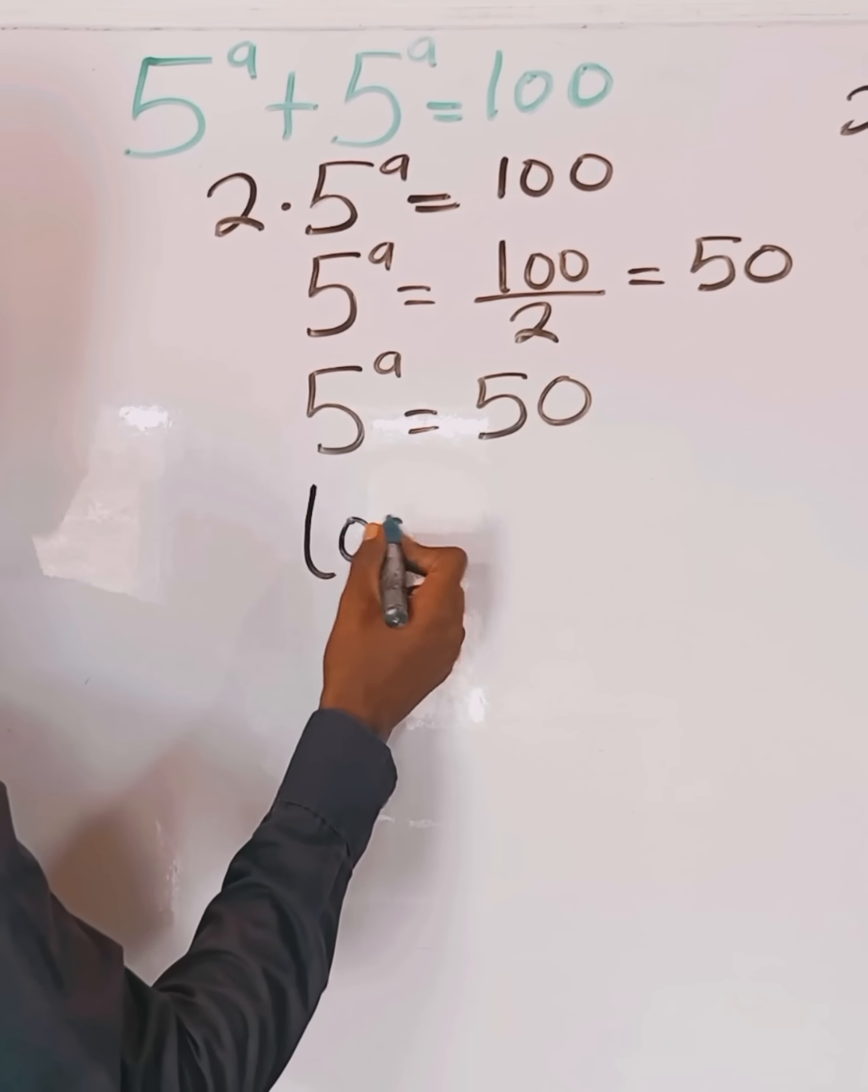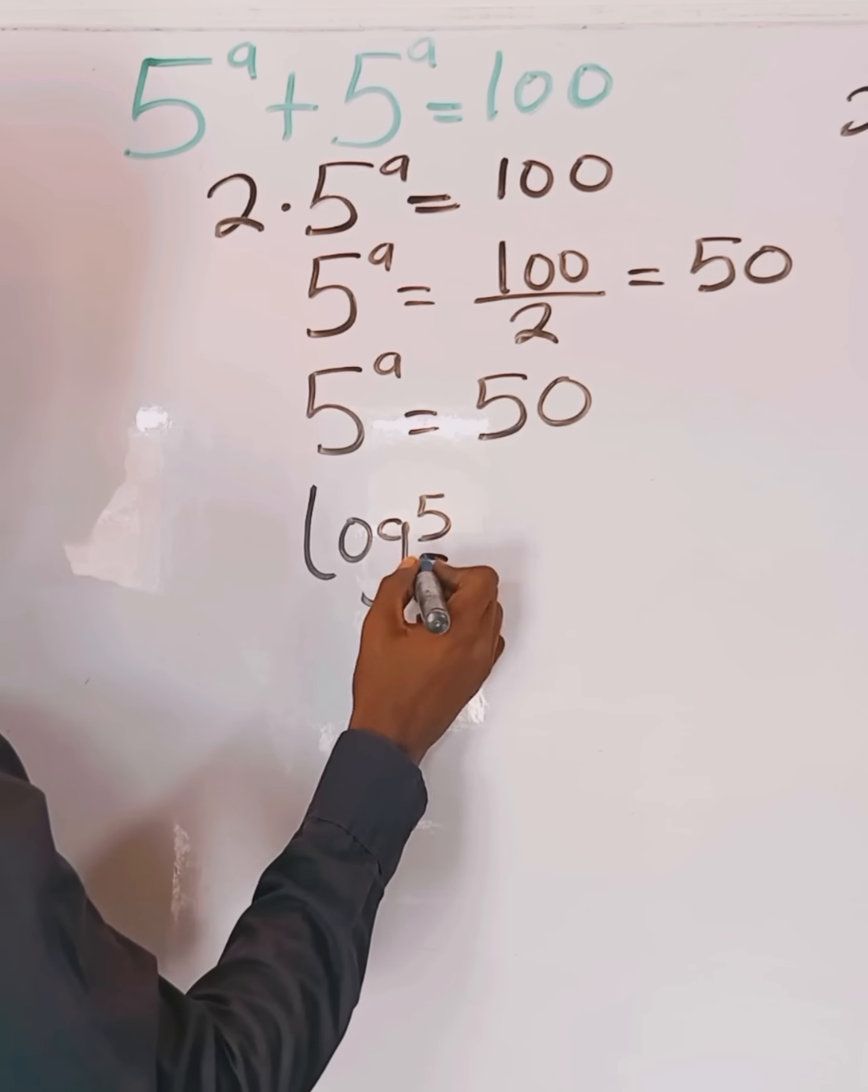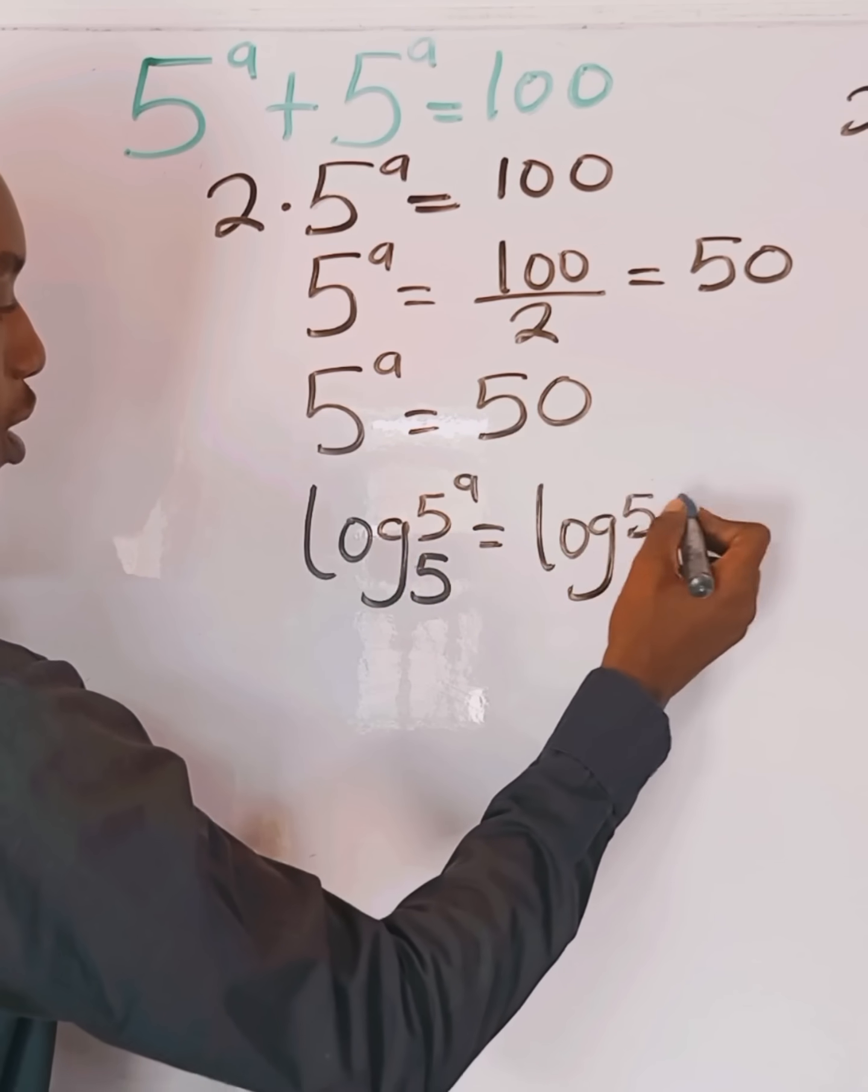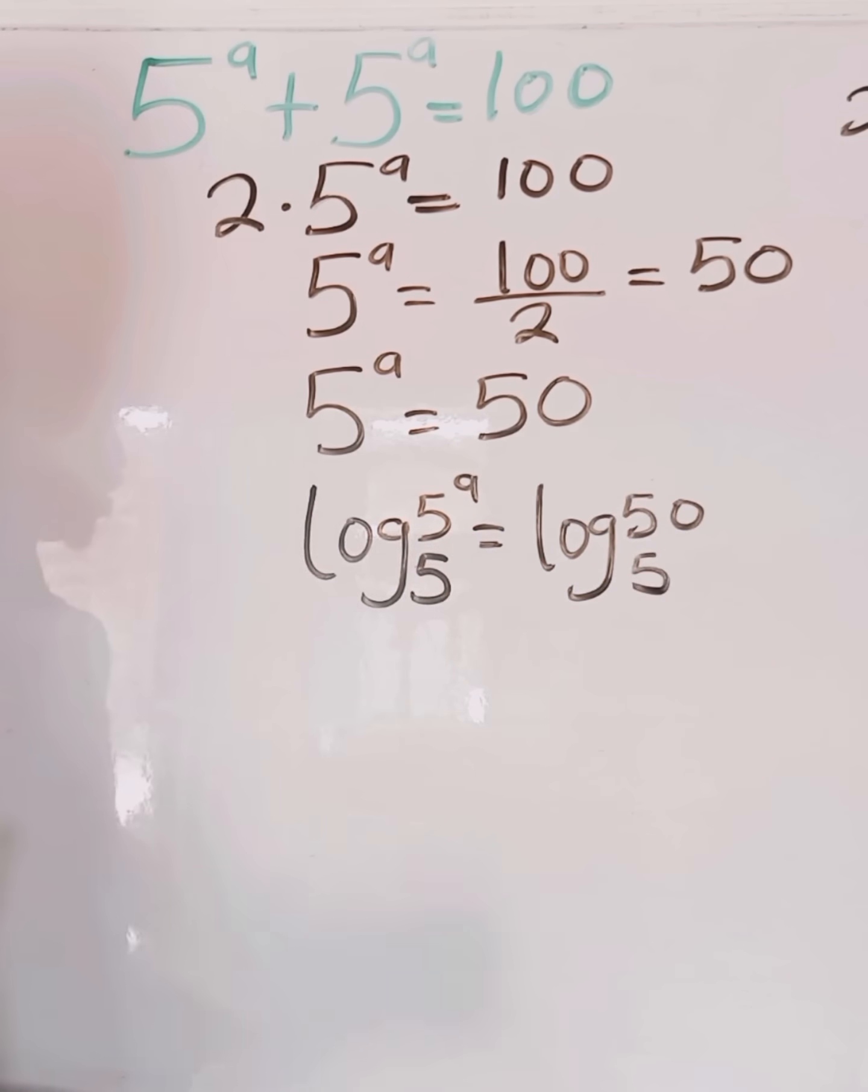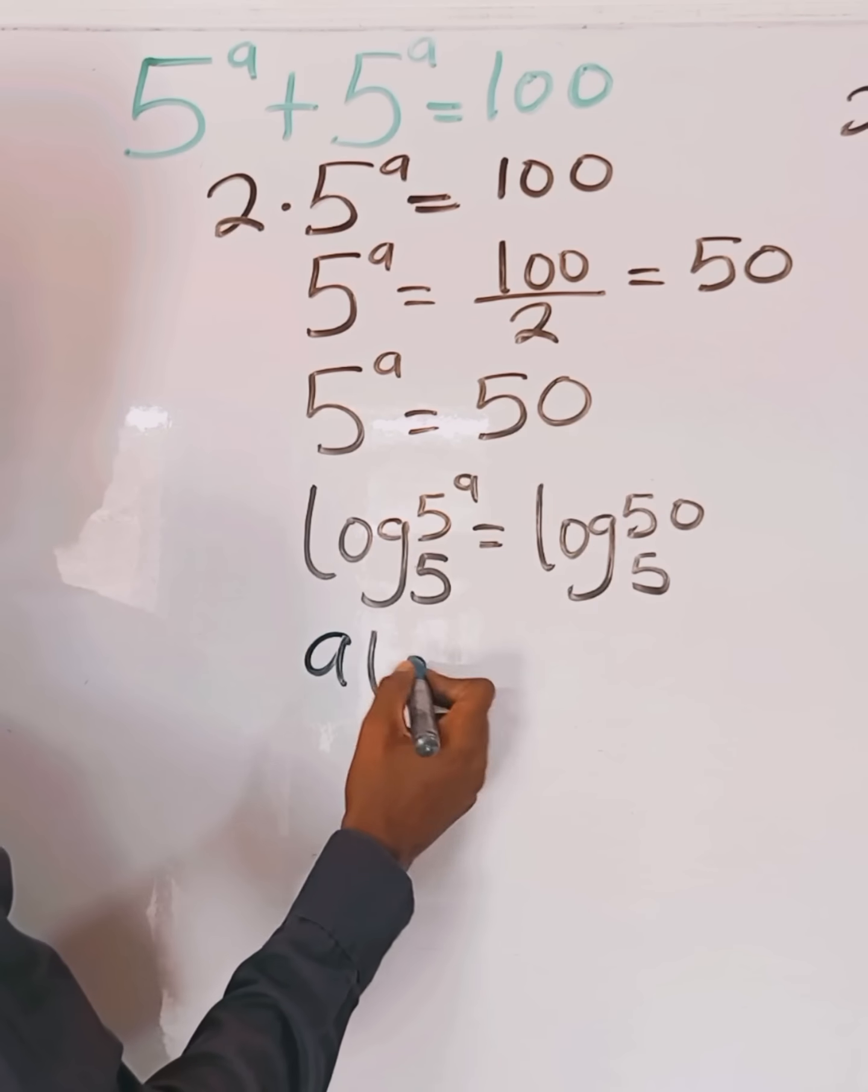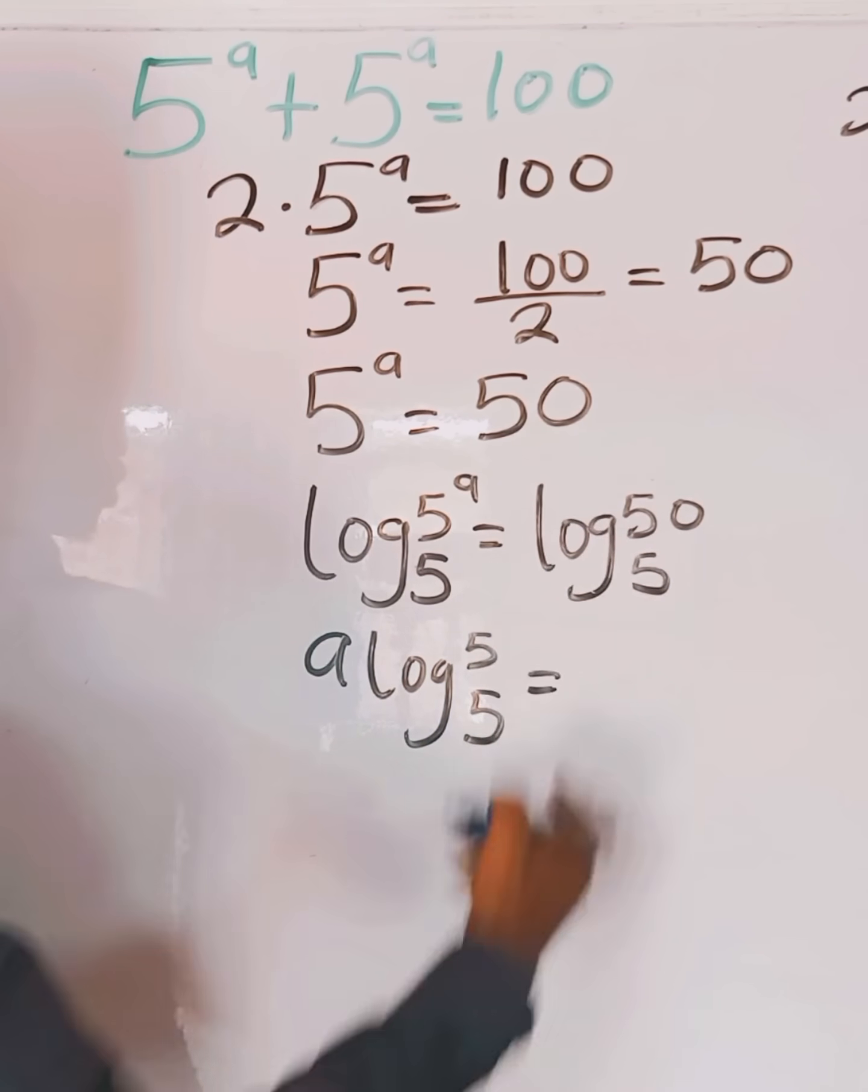Then we take log base 5 of both sides. We have log base 5 of 5 to the power of a equals log base 5 of 50. Now, by the law of logarithms, the a comes in front. So we have a times log base 5 of 5.